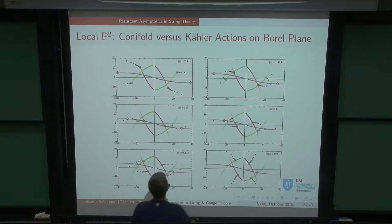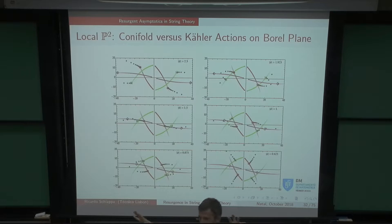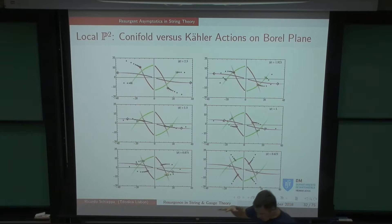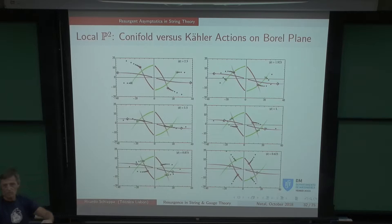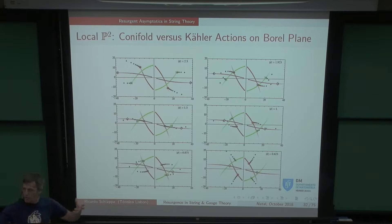There's something more intricate: the large-radius instanton action (purple) moves into another sheet of the Borel surface — it's away from the principal sheet and no longer controls the leading-order growth on that sheet. This leads to a more complicated structure associated with co-equational resurgence. This just gives a glimpse that all instanton actions play important roles in different regions of moduli space, and the structure is highly non-trivial.